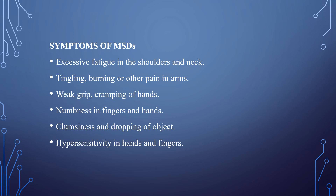What are the symptoms of musculoskeletal disorders? Stiffness in the shoulders and neck, tingling, burning or other pains in the arms, weak grip and cramping of hands, numbness in fingers and hands, clumsiness and dropping of objects — as mentioned, holding objects within the grip becomes a problem. Hypersensitivity in hands and fingers are the symptoms we can see in musculoskeletal disorders.